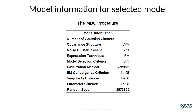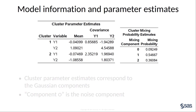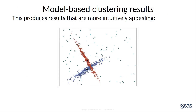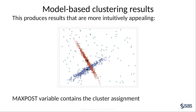Now that you have fit the model, look at the model information for the selected model. You'll see information about the number of Gaussian clusters, the covariance structure, and whether the selected model includes a noise cluster, along with other information about the selection and estimation process. The parameter estimates and mixing probability estimates describe the selected mixture model. The parameter estimates describe the mean and covariance of each Gaussian cluster. In the mixing estimates table, the numbering starts at zero because this model did include a noise component — component zero is the noise component. The marker symbol and color indicate which cluster each point was assigned to, and these results conform to the impression of two clusters, each with strong correlation and some background noise.